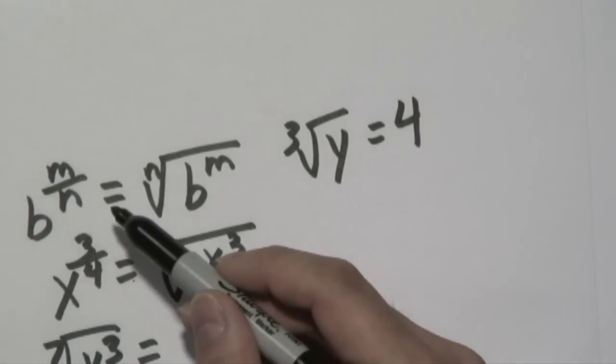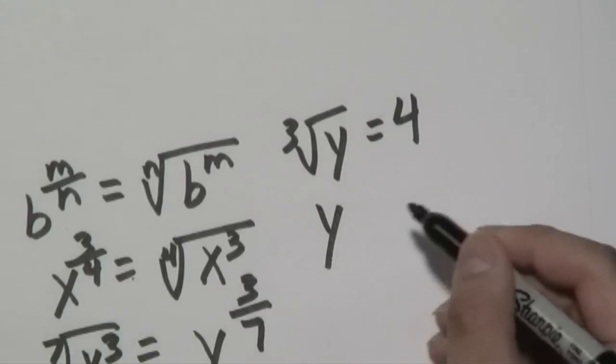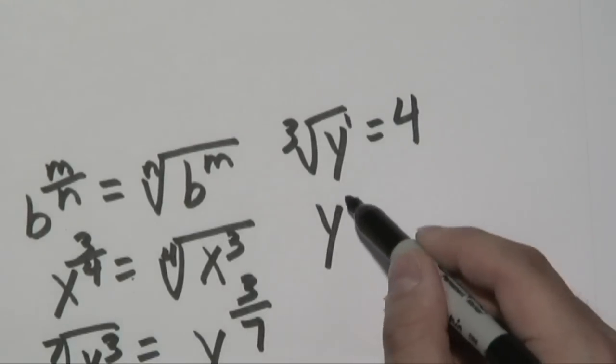Again, use this property right next to it that we've been talking about since the beginning of this lesson. You have y.